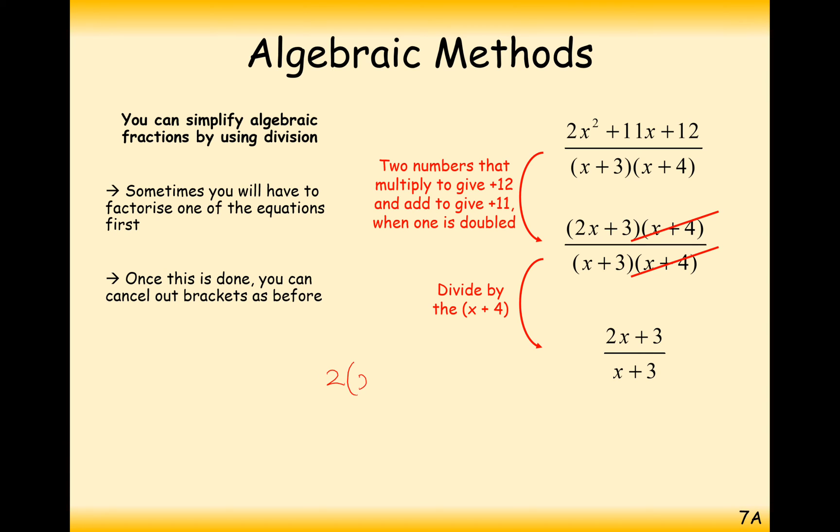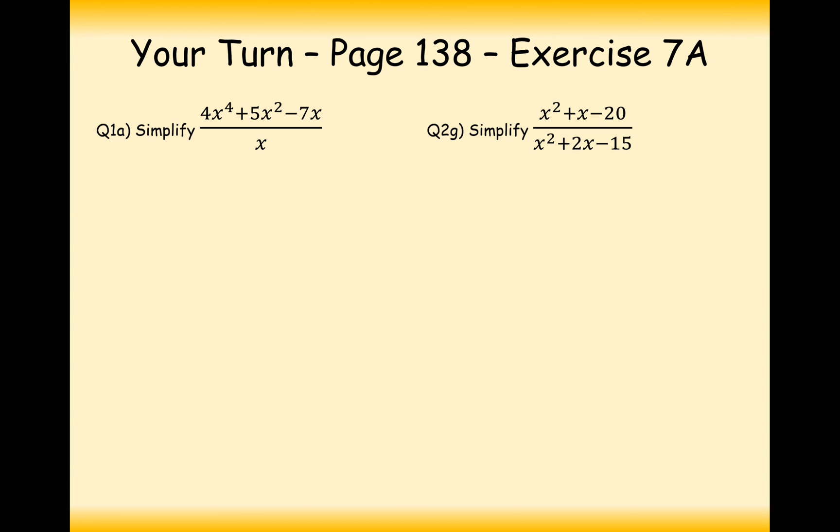If it was for example 2 brackets x plus 3 over x plus 3, then yes you could cancel it out. But in this case here it's just 2x plus 3, not 2x plus 6. Your turn then, pause the video and have a go at this question.